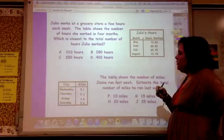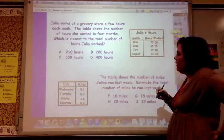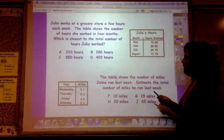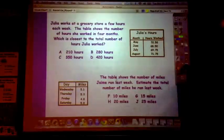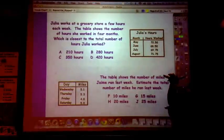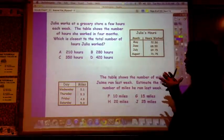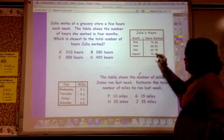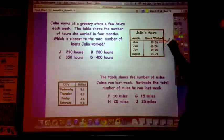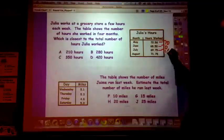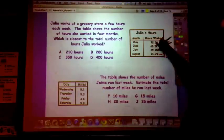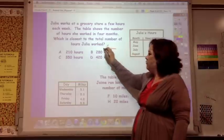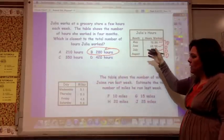Okay. So Julia works at a grocery store a few hours each week. The table shows the number of hours she worked in four months. What was the closest to the total number of hours Julia worked? So we're going to estimate these. And this is a little different. We're going to kind of round, but to a number that's closest to all of them. And if I look at these, they're all close to seventy. So this is close to seventy. This is close to seventy. This is close to seventy. And this is close to seventy. This is a little bit above seventy, below seventy, below seventy, above seventy. So seventy times four would be 280 hours. And if you look at those, that's the one that's most reasonable.